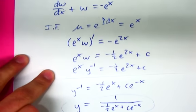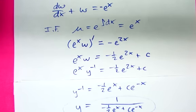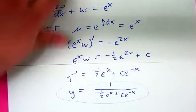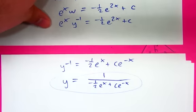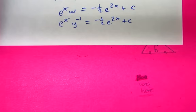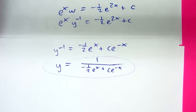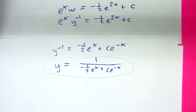From dW/dx plus w equals negative e^x, we put the integrating factor in — the dW/dx gets absorbed into the derivative on the left side. The procedure we learned for linear equations is why we can do that, so instead of re-explaining it, refer back to that.